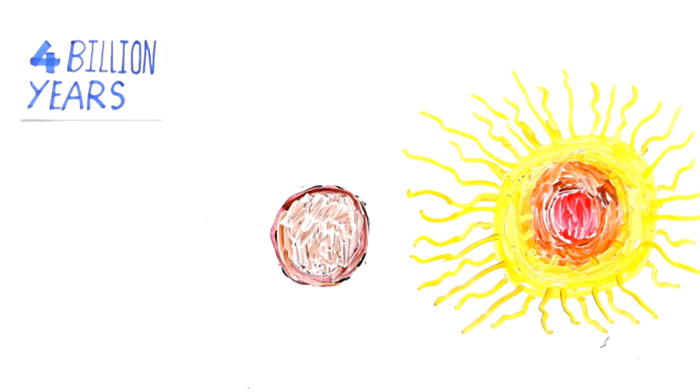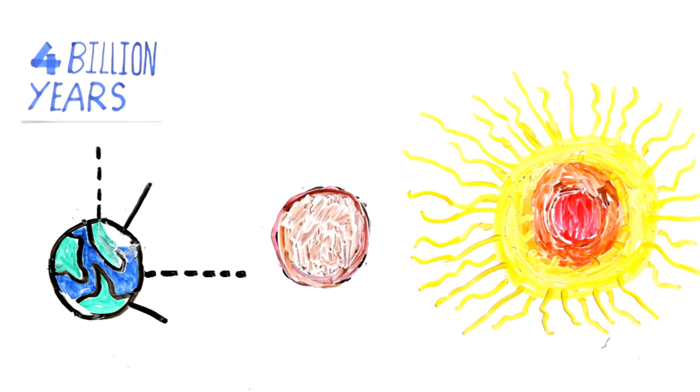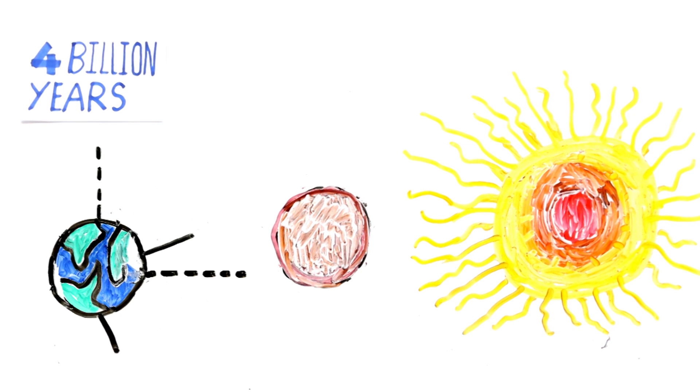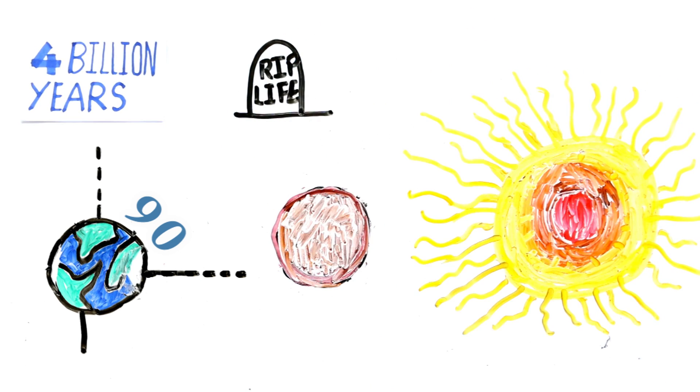Four billion years from now, the increase in the Earth's surface temperature will cause a runaway greenhouse effect. The axial tilt of the Earth may begin to undergo chaotic variations, with changes in the axial tilt of up to 90 degrees. By that point, most if not all the life on the surface will be extinct.